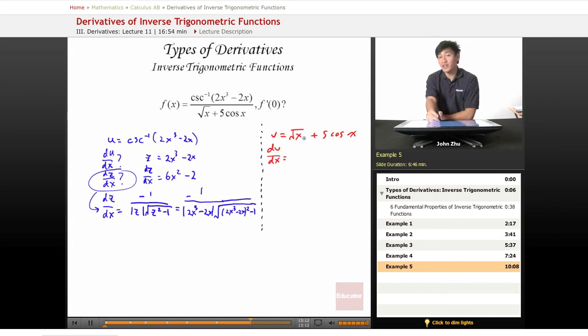we know that square root of x is just x to the 1 half. So applying the power rule directly, 1 half x to the negative 1 half plus 5 times the derivative of cosine of x, which is negative sine of x. So we rewrite this, 1 half x to the negative 1 half minus 5 sine of x.